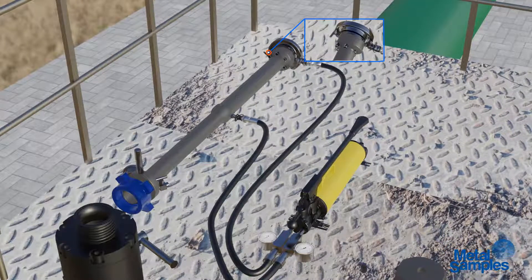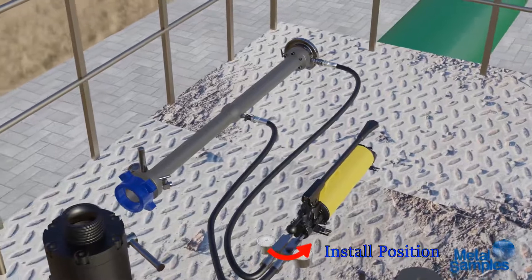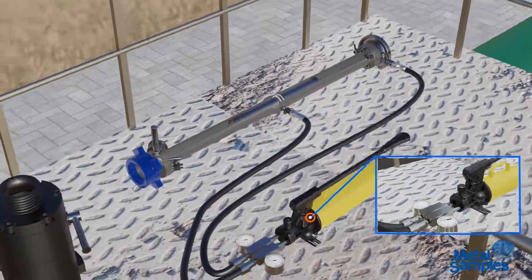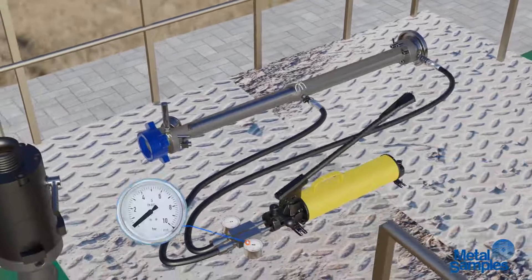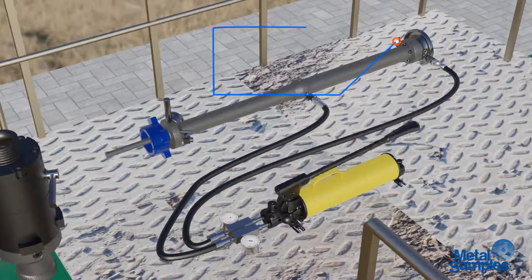Head valve on the retriever head must be open. Put the flow direction valve on the hydraulic pump to install position. Pump till the connecting rod in the hydraulic retrieval tool is fully extended out.